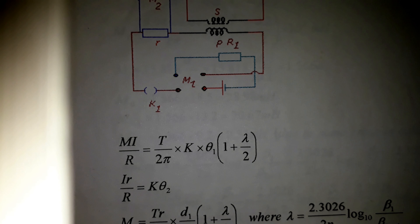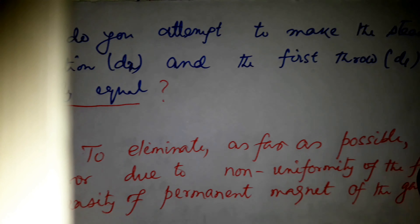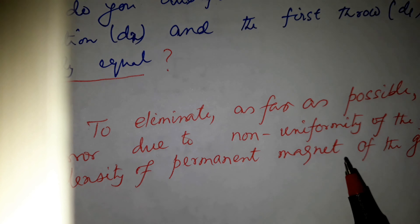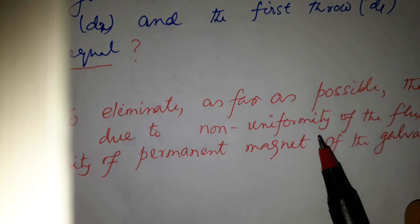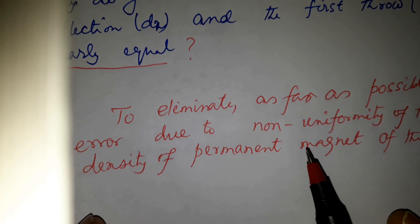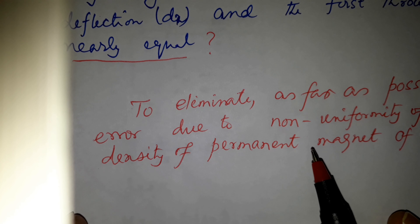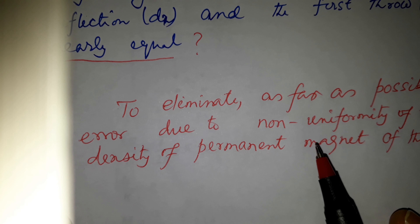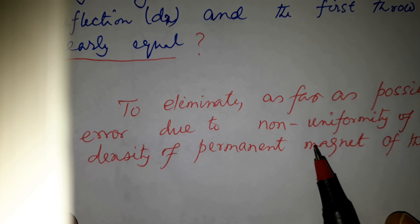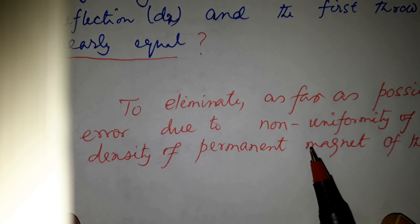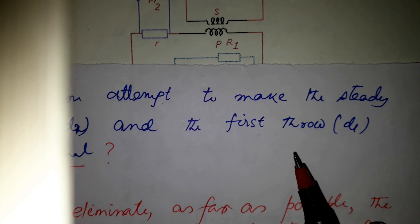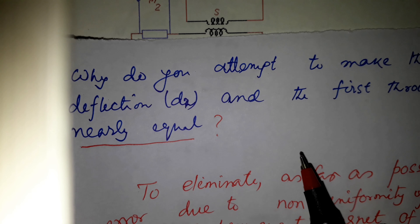We attempt to make the steady deflection D2 and the first throw D1 nearly equal in order to eliminate, as far as possible, the error due to non-uniformity of the flux density of the permanent magnet of the galvanometer. The non-uniformity of the permanent magnet inside the ballistic galvanometer causes errors in finding theta_1 and theta_2, making M inaccurate. To get a correct value of M, we make theta_1 and theta_2 nearly equal.